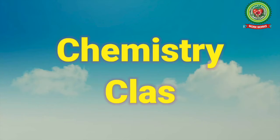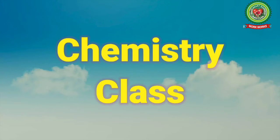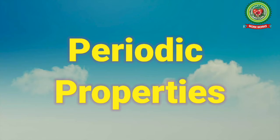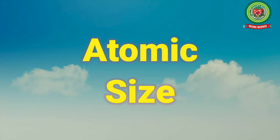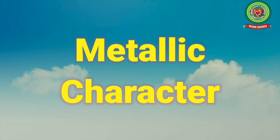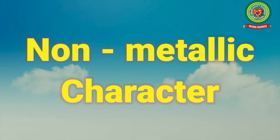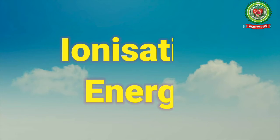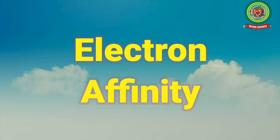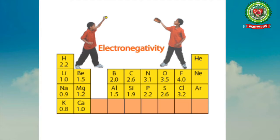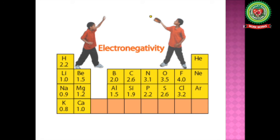Hello students, welcome to the chemistry class. In our previous videos we have already discussed about some of the periodic properties of the periodic table, which were atomic size, metallic character, non-metallic character, ionization energy and electron affinity. In this video we will further discuss about the next periodic property of the periodic table, which is electronegativity.